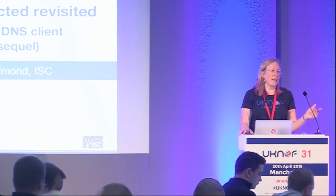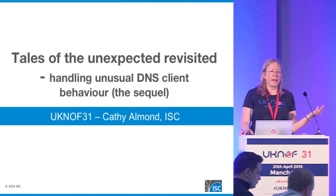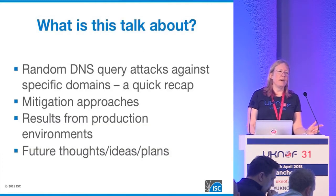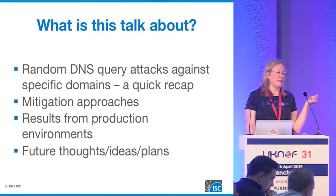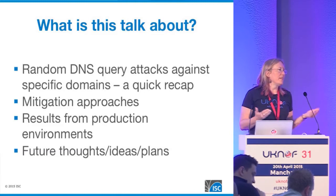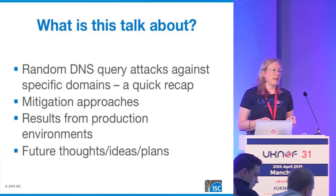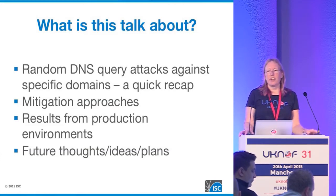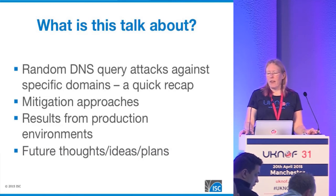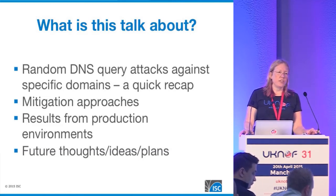I was going to go over some of the attack vectors, but I'm going to skip over that fairly quickly because Ralph's covered it pretty thoroughly. What I was going to talk about was a summary of the attack vectors, then go through some experimental approaches that we've been trying on BIND. I've also got some results because we've had a number of ISC's customers using our test mitigation strategies in production environments, and the outcomes have been mostly successful, but quite interesting to look at. As a result of that, we have some other ideas that we're thinking about before we put this into mainline production.